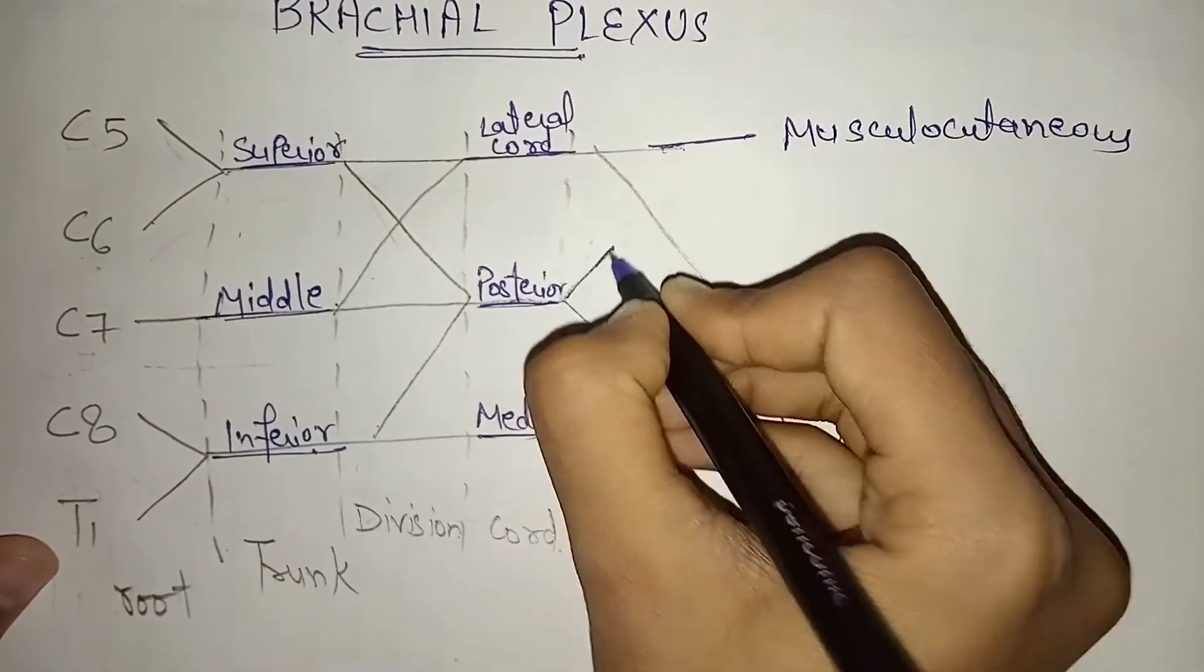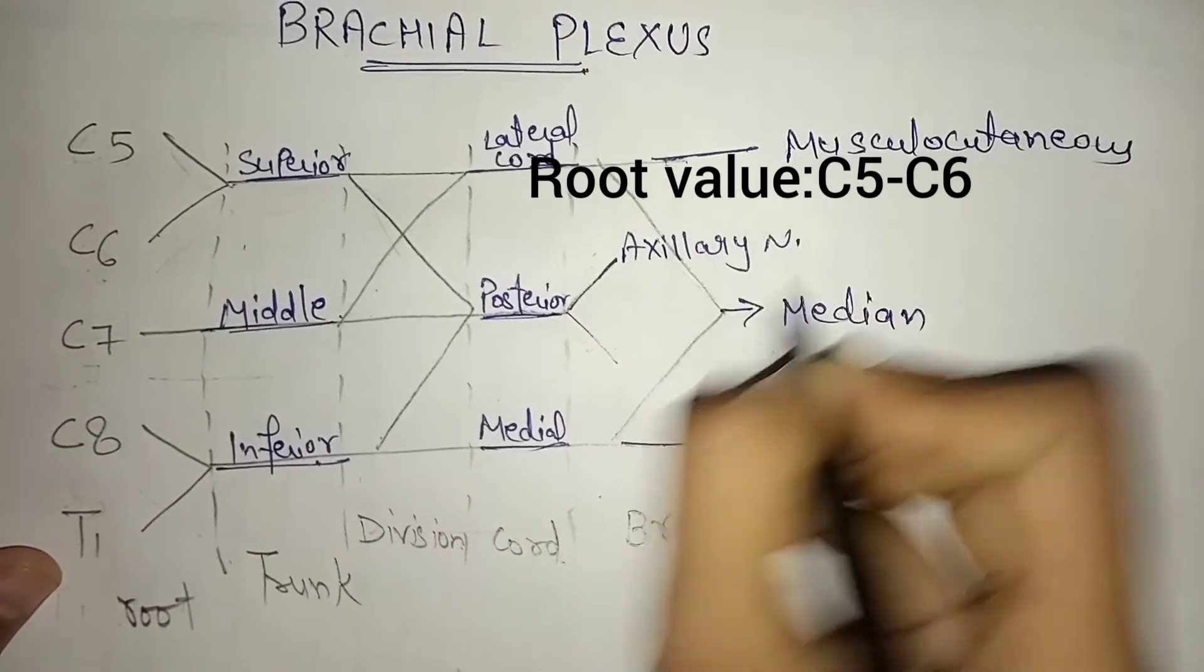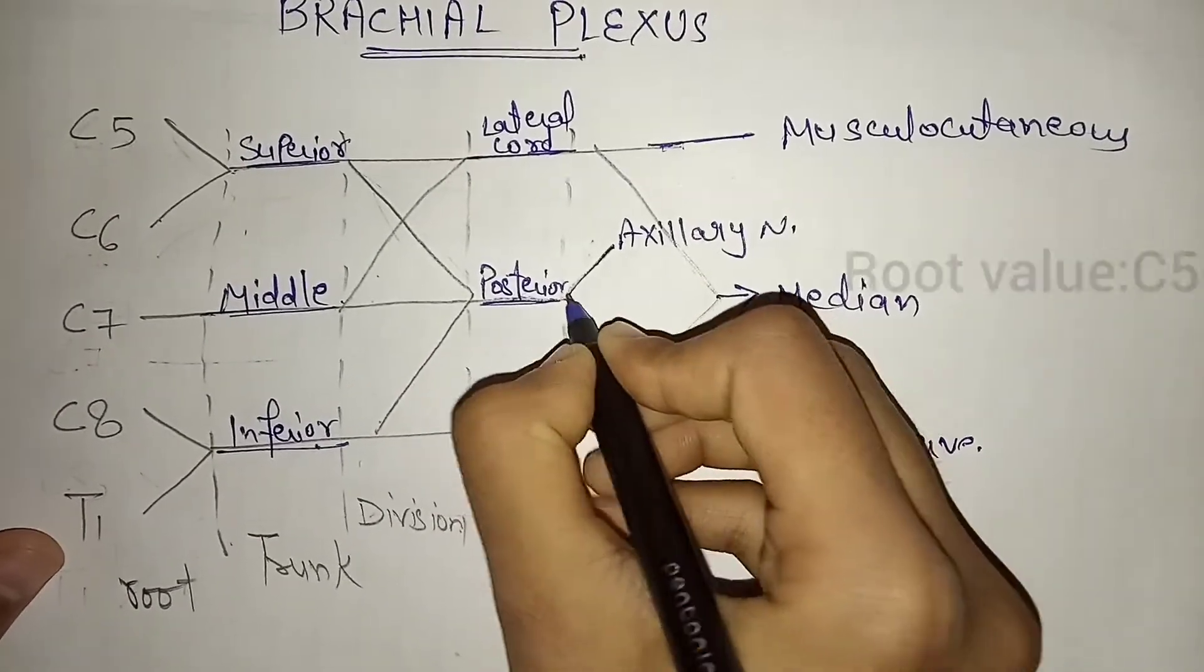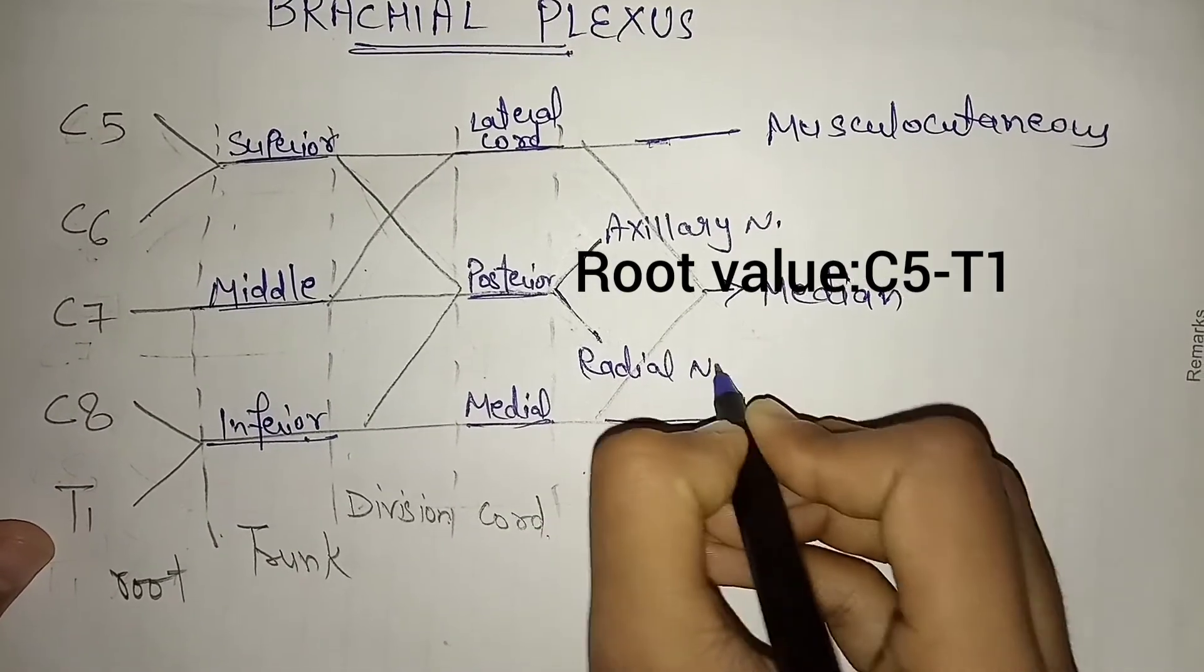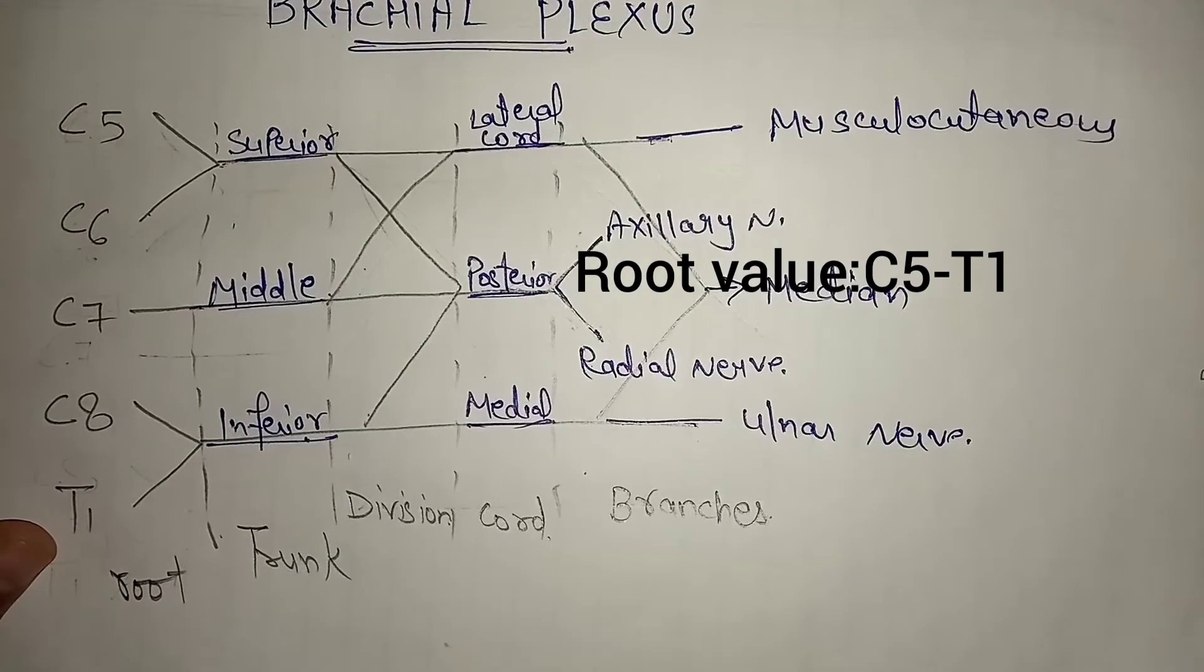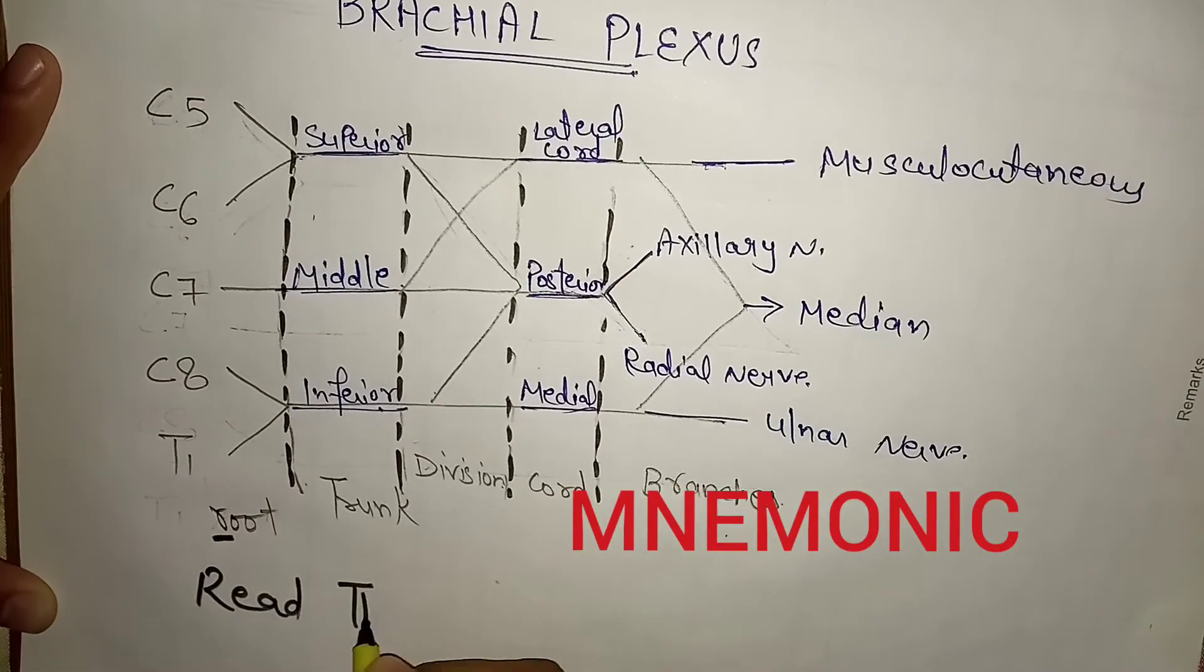Up next is axillary nerve which is a part of posterior chord, and radial nerve whose root value is C5, C6, C7, C8, and T1. So I hope this video will be useful for you all.